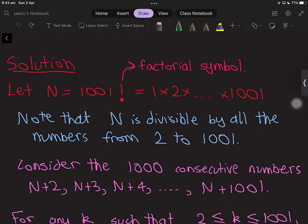Note that N is divisible by all the numbers from 2 to 1001. This is because we see the number 2 here, and we also have 3 and 4 and so on up to 1001 in our product.